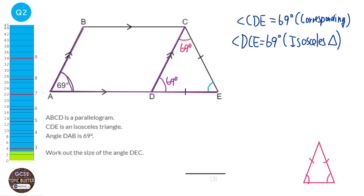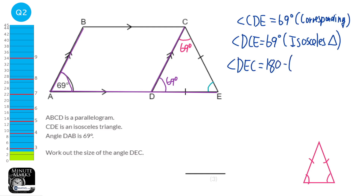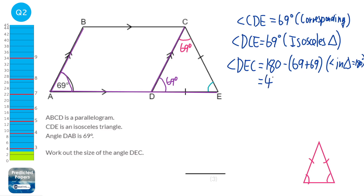Finally, we can work out what angle DEC is by taking those angles away from 180. So angle DEC equals 180 minus (69 plus 69). The reason for that is angles in a triangle equal 180 degrees. When you do that, you get the answer of 42 degrees.